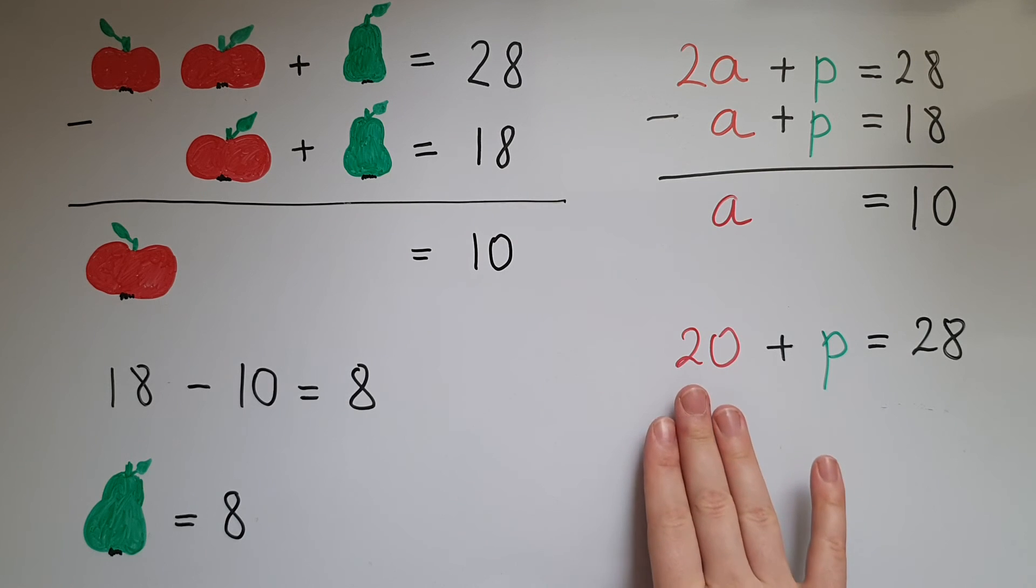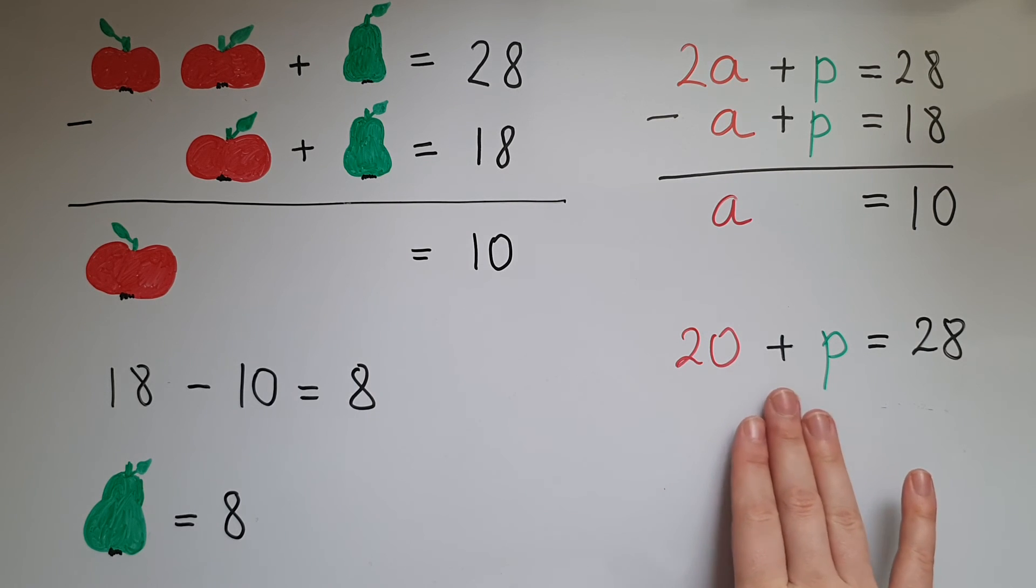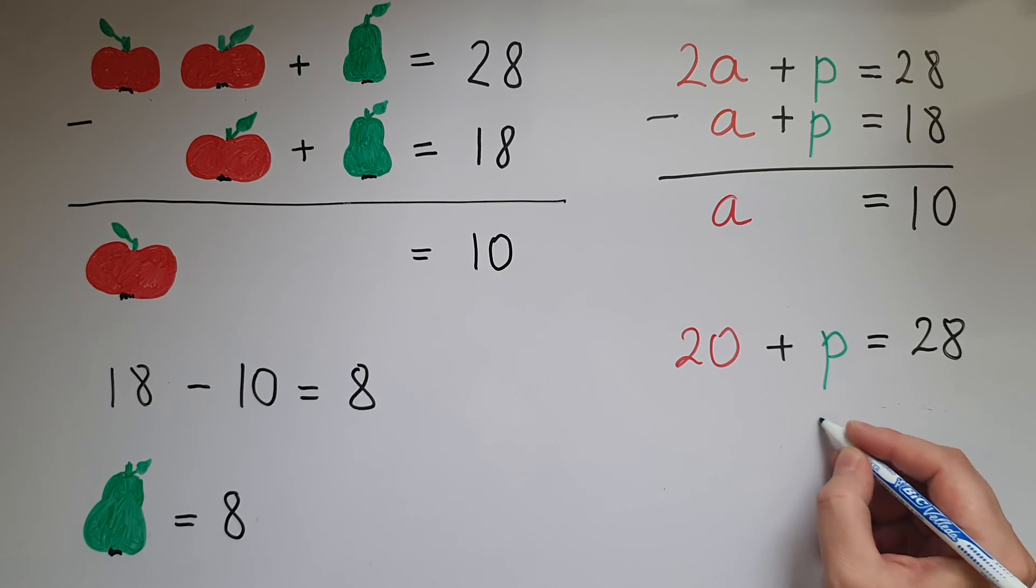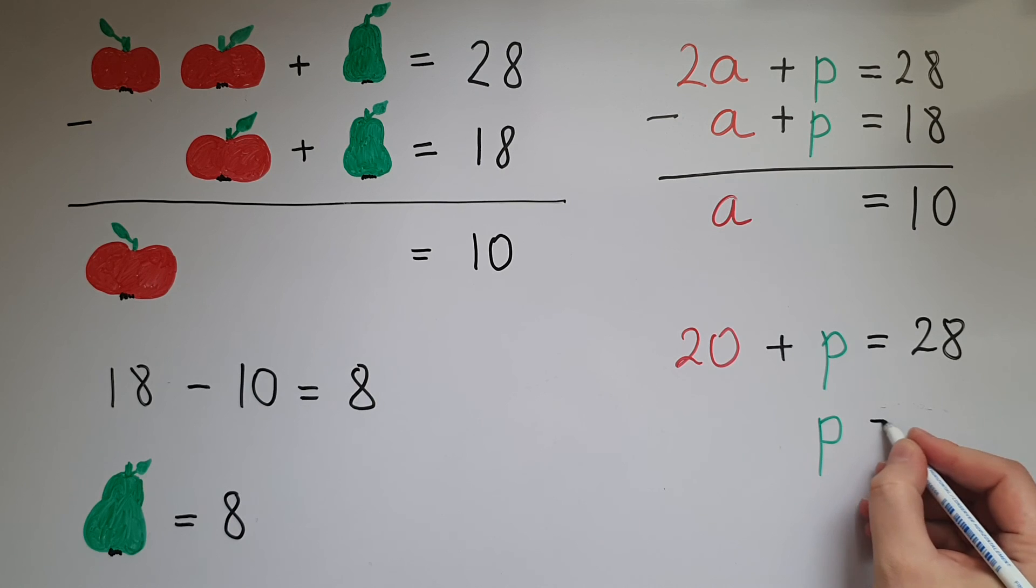Now this is saying 20 add a number equals 28. And if we take away 20 from both sides, we're just left with p equals 8. Now I've got the values for both a and p, both of the unknowns.